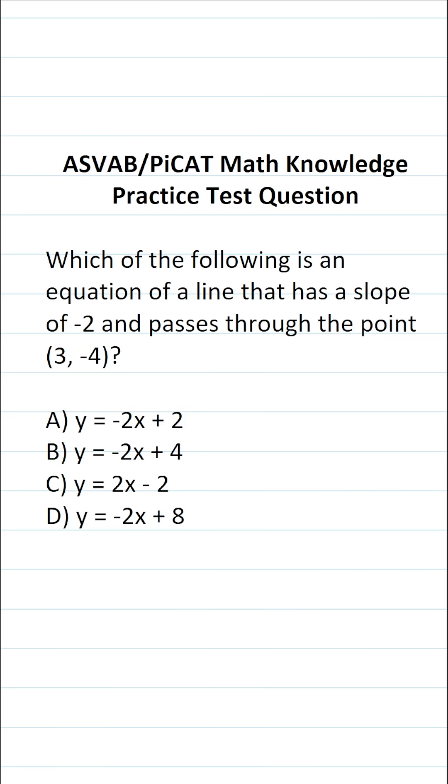This math knowledge practice test question for the ASVAB and PiCAT says, which of the following is an equation of a line that has a slope of negative 2 and passes through the point (3, -4)?